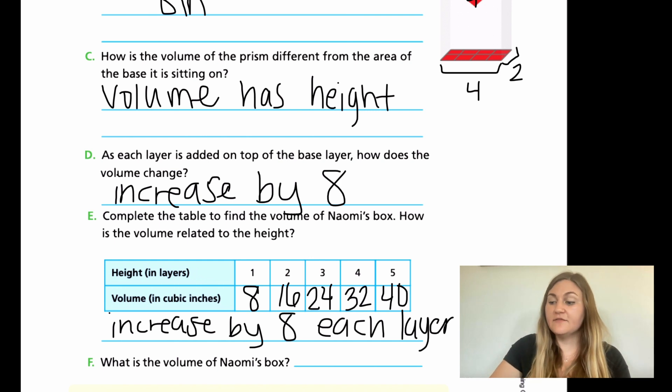And then F, what is the volume of Naomi's box? Remember, you have to have your units for this to be correct. Don't just be writing the number. So the volume of the box, if there's 5 layers, we know that that number up in E was 40. So if you put 40, you're almost correct. You want 40 inches because that's our unit. And because we're finding volume, it's length times width times height, which means that exponent up in the top is going to be a 3. And you would say it as 40 inches cubed or 40 cubic inches. Either one works.